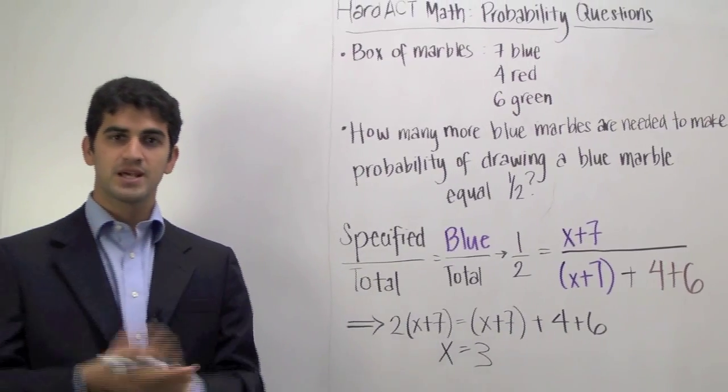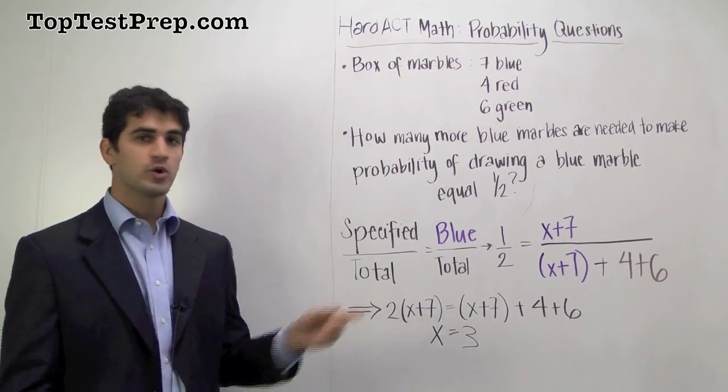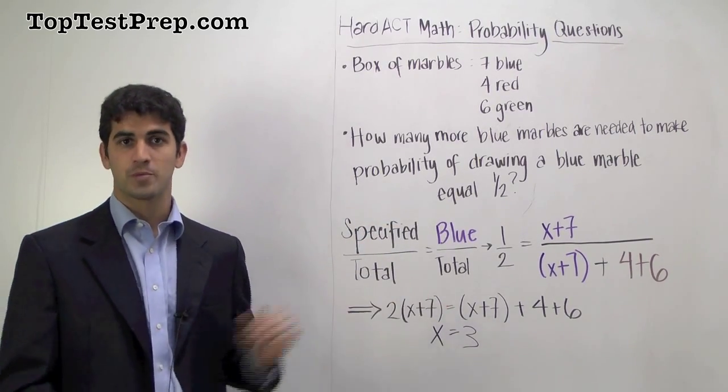So, remember the key tip for solving probability problems is simply to write an equation where we write the specified scenarios that we're looking for divided by the total number of scenarios.